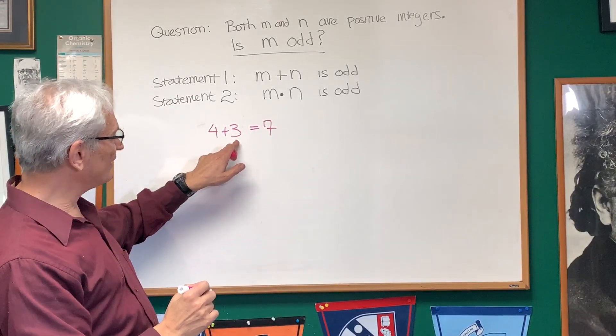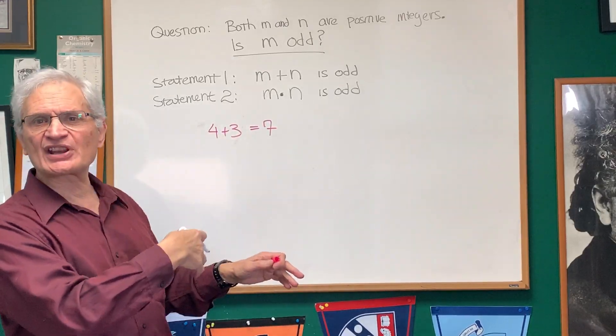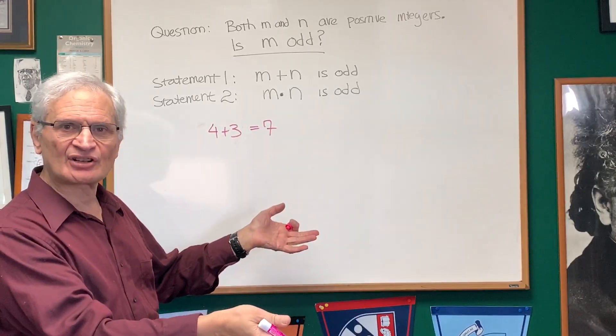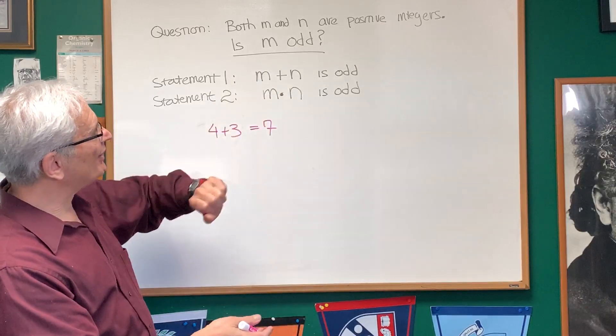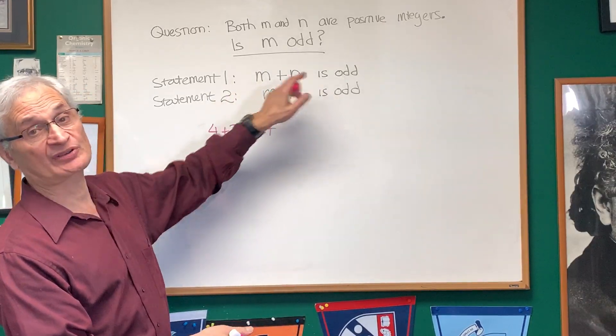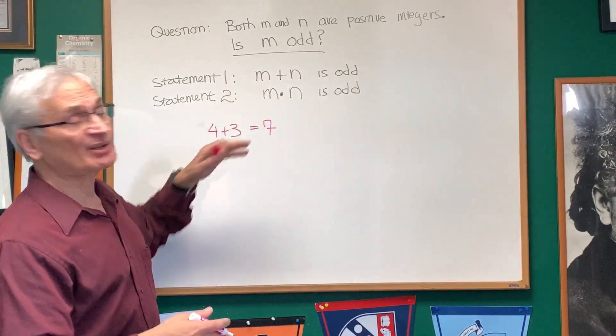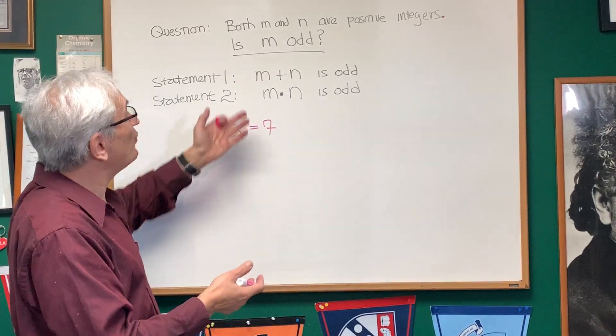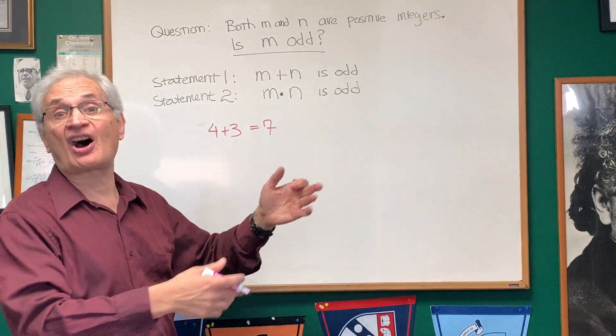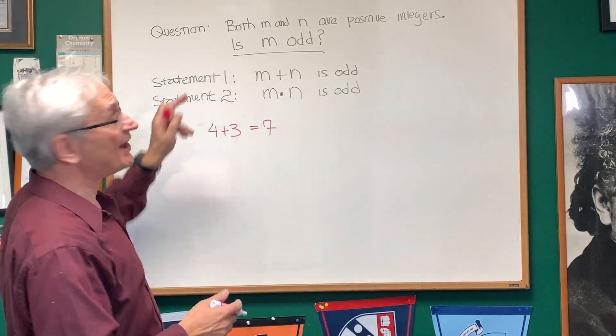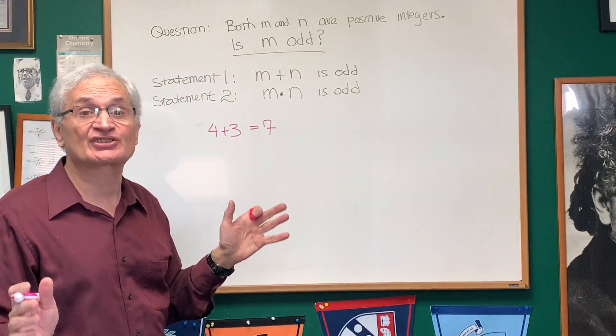M is four, N is odd—N is three. One is even, one is odd. That's the condition under which M plus N is going to be odd. One of them is odd and one of them is even. But it's ambiguous. There's nothing that tells us which one of M or N is odd and which one is even. So statement one is insufficient to answer the question.